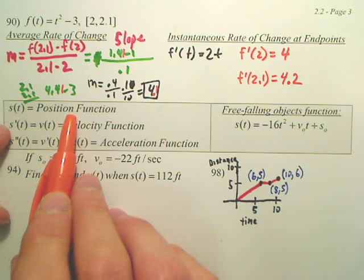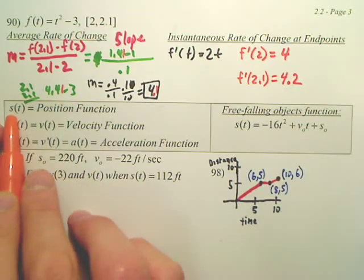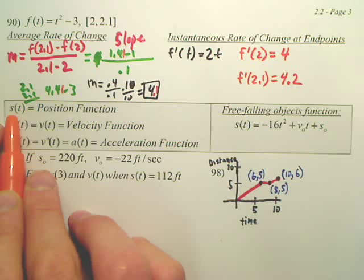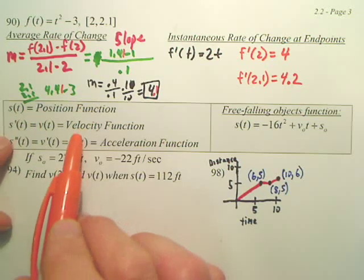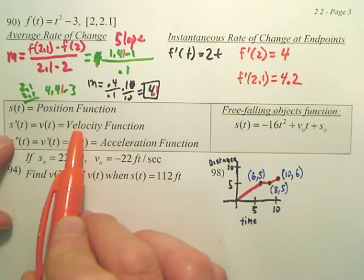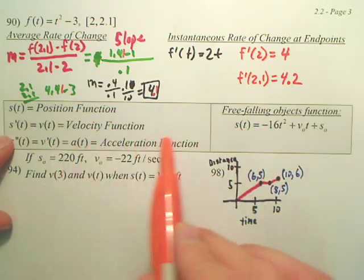Let me talk about these again. Position function, usually it's s. I know it's stupid, it should maybe be a p, but position stands for distance. How far something's going, how far it is, what position it's at. Think of a car driving back and forth. At what position is the car at?